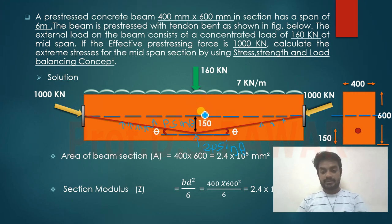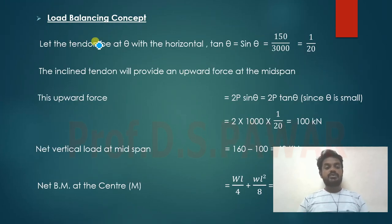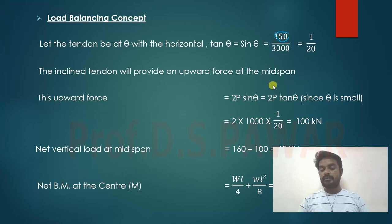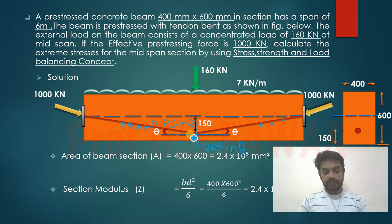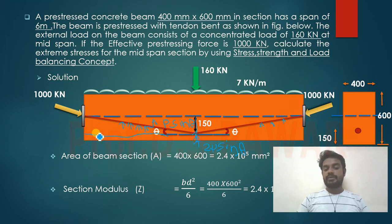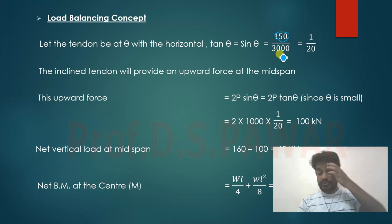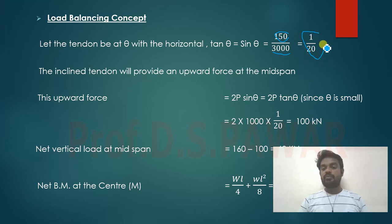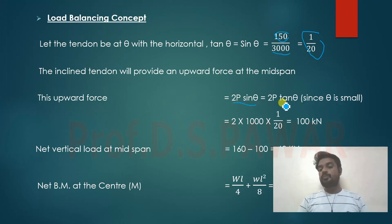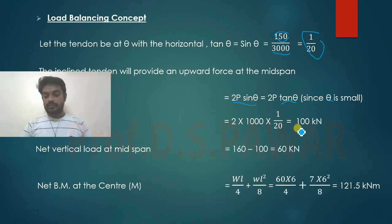We calculate the angle θ that the tendon makes with the horizontal. The tendon rises 150 mm over half the span (3000 mm), so tanθ = 150/3000 = 1/20. Since θ is small, sinθ ≈ tanθ. The net upward force is 2 × 1000 × (1/20) = 100 kN.